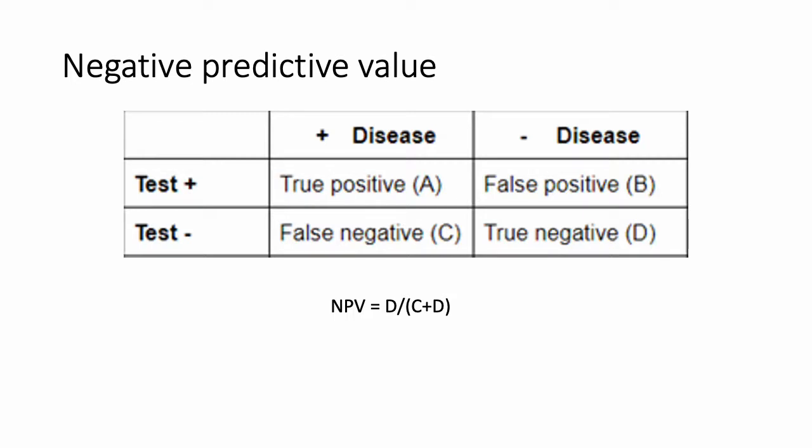The negative predictive value is similarly dependent on the prevalence of the disease in the population that you're studying, and can be calculated by dividing the number of true negatives out of all the patients who tested negative — D over C plus D.